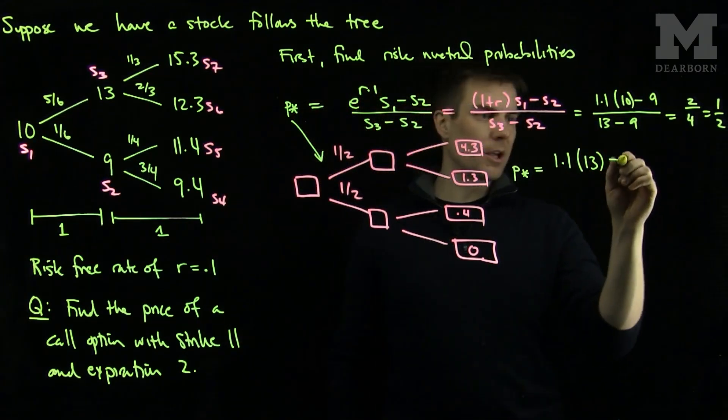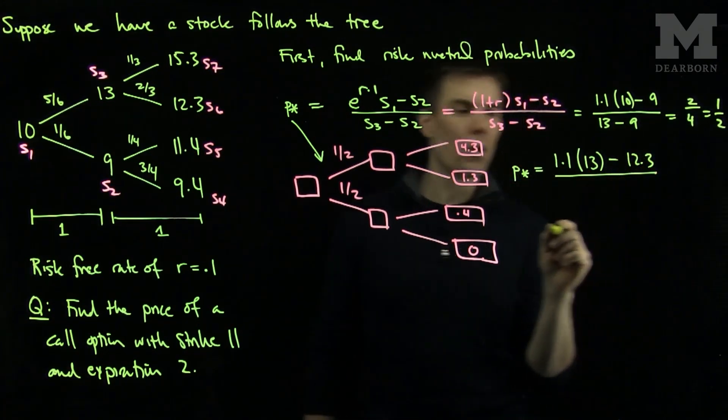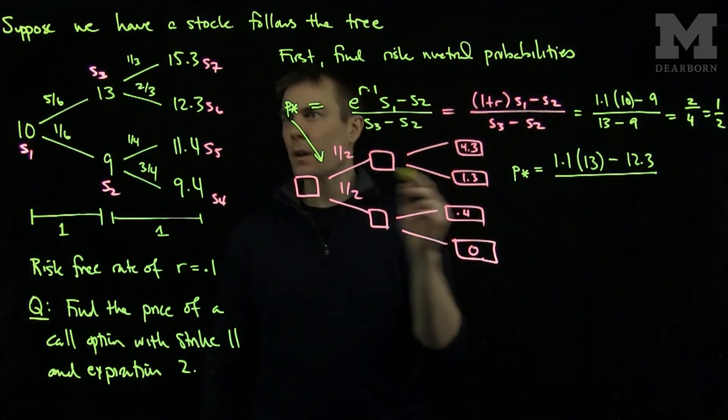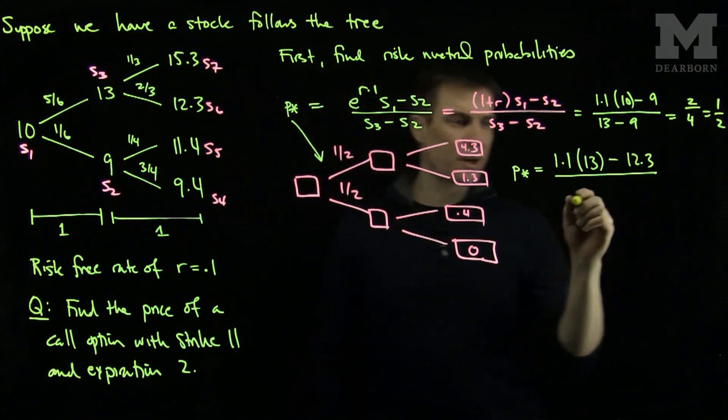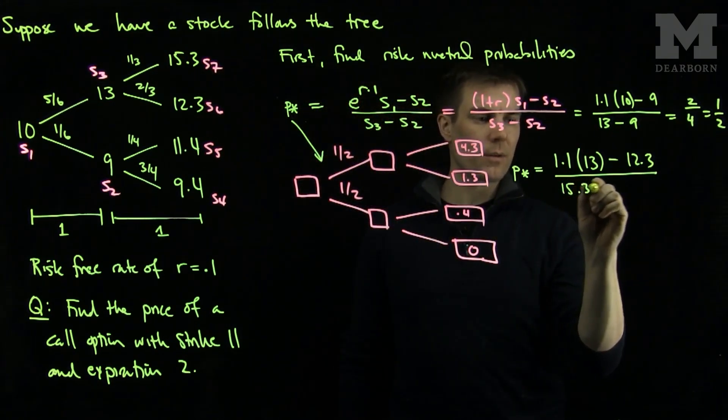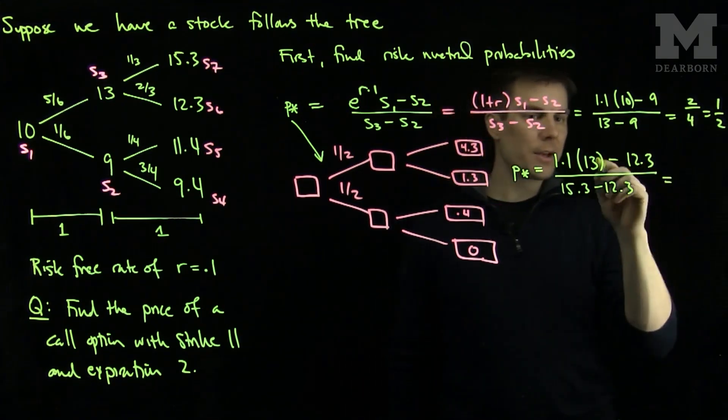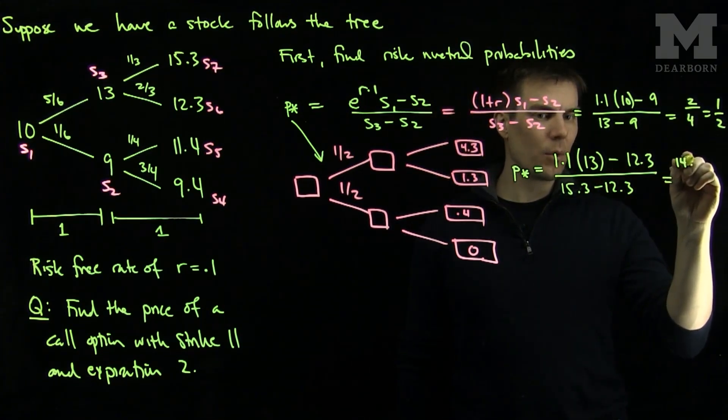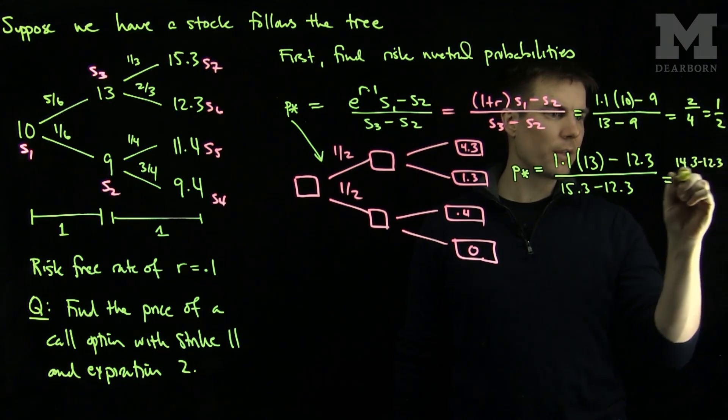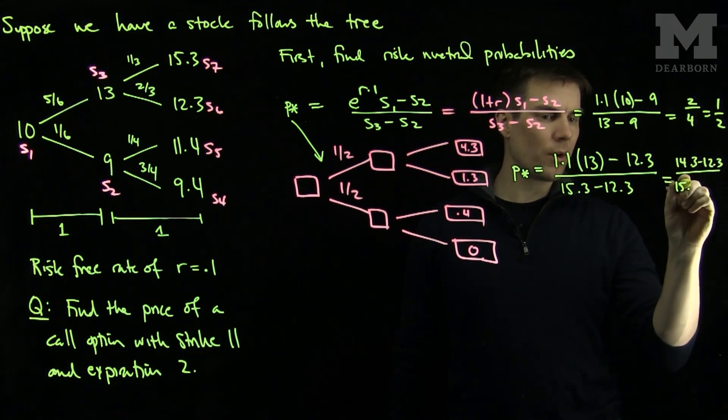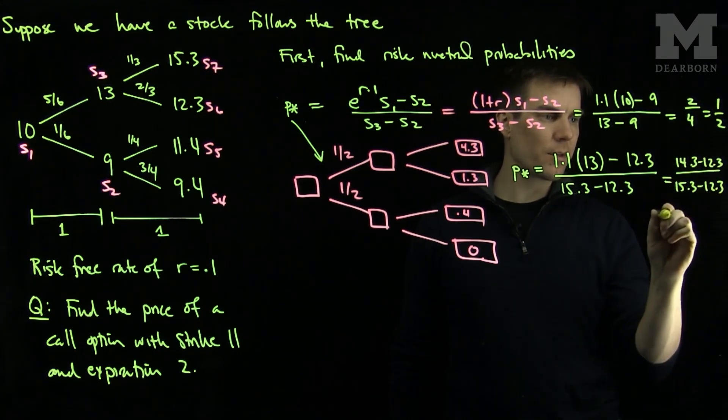over the difference of the stock prices. 15.3 minus 12.3. So we see the top is going to be a 14.3 minus 12.3 over 15.3 minus 12.3.